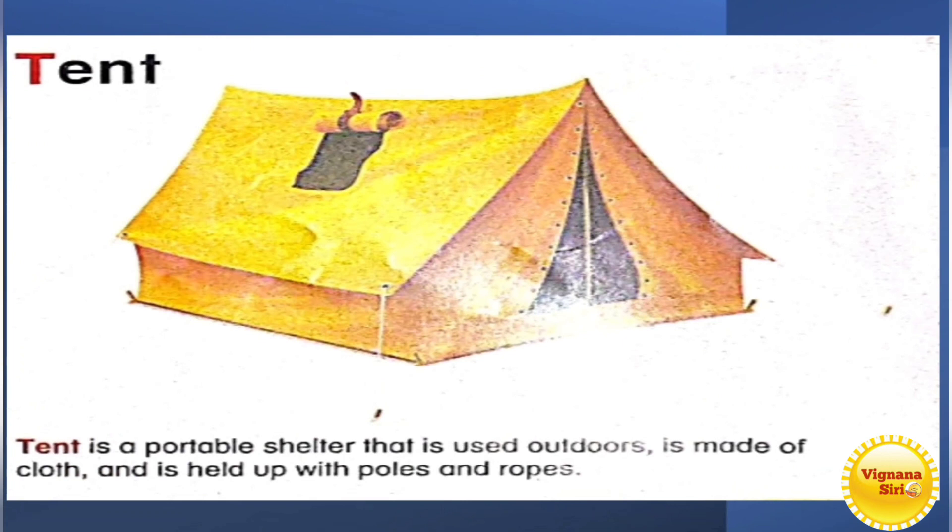T for tent. Tent is a portable shelter that is used outdoors and is made of cloth and is held up with poles and ropes. This one, persons who will be traveling to trekking or some other places where there will be no houses, they will be carrying with them. As this is made with cloth, it's not that much weight. They can carry easily. So with the help of poles and ropes, they will keep like this.